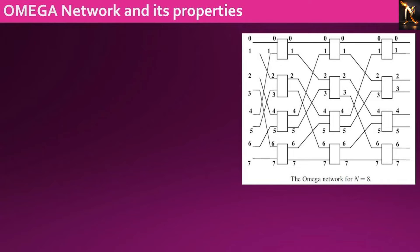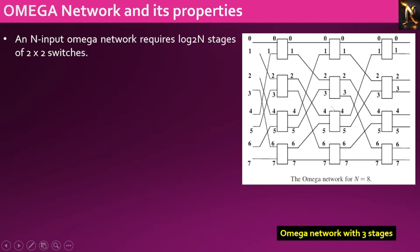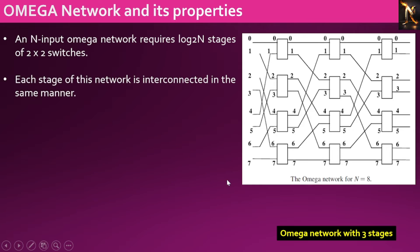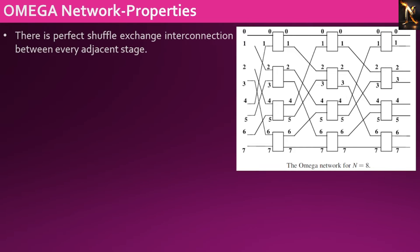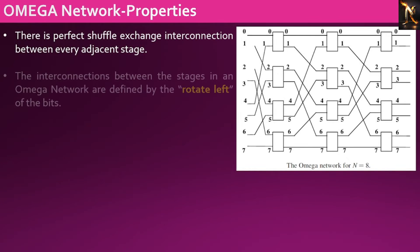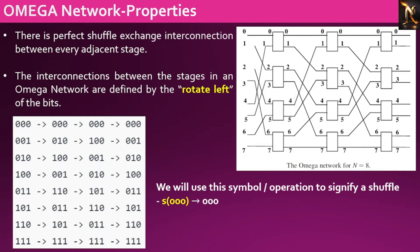Now let's delve into the operation of the omega network. An N-input omega network necessitates log₂N stages of 2×2 switches. Each stage comprises N/2 switch boxes, with each switch box being in one of four states: straight, exchange, upper broadcast, or lower broadcast. A perfect shuffle-exchange interconnection is established between each consecutive stage of the omega network. The interconnections between stages are determined by the rotate-left operation on the bits, denoted by the symbol S, signifying a shuffle, where S(000) transforms into 000.